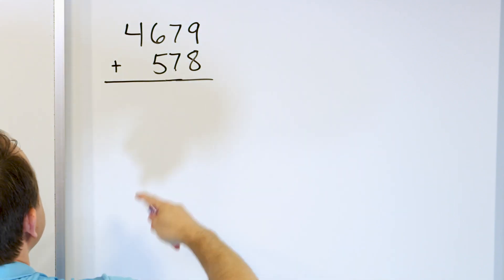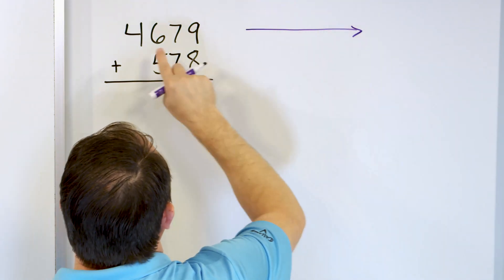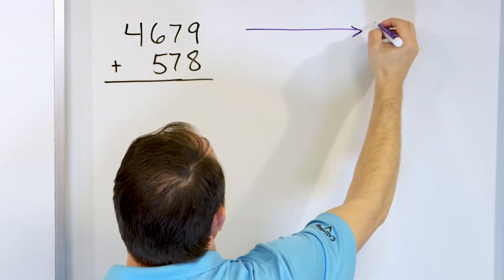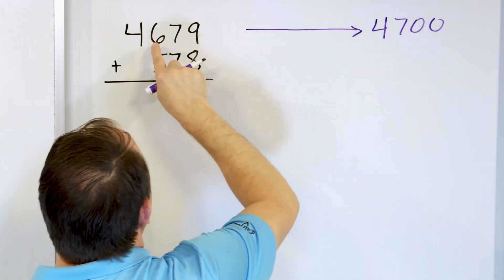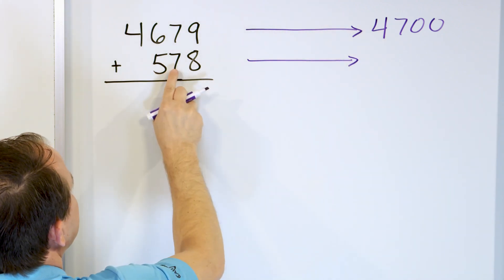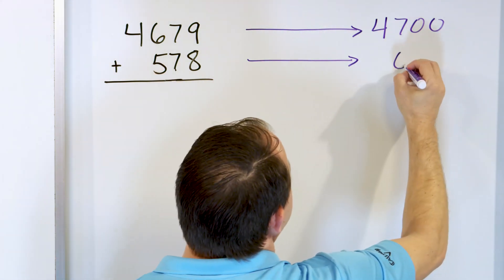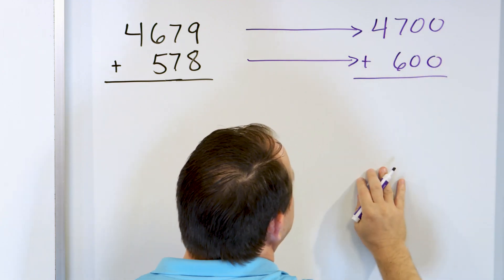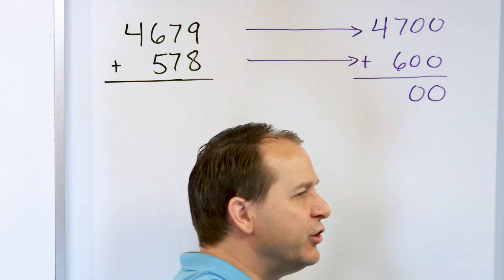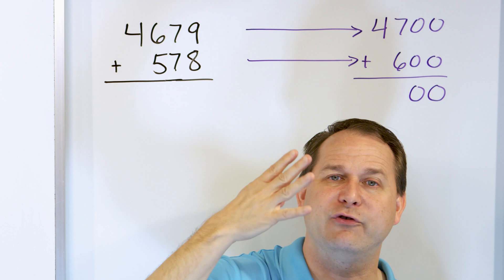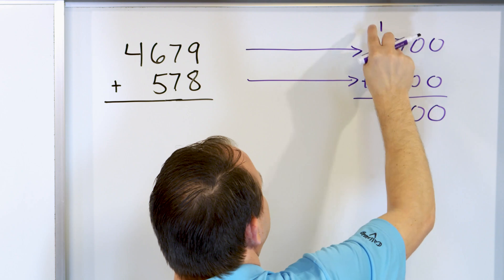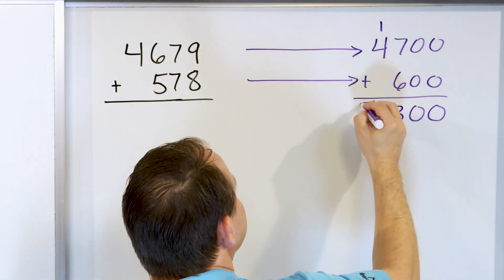For 4,679, we're rounding to the hundreds position — seven is bigger than five, so it rounds up to 4,700 (the six turns into a seven). For 578, we round to the same position — this is also bigger than five, so we round up to 600. Then we add: zero plus zero is zero, zero plus zero is zero. Seven plus six: counting up gives 13, so put a three and carry a one, four plus one is five. The answer is 5,300. It's an estimate — not exact, that's the whole point.